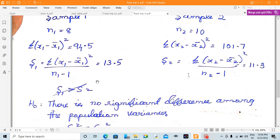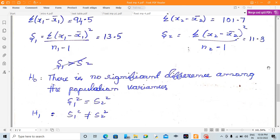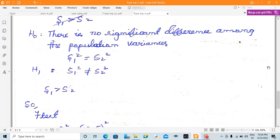We have 94.5 divided by 7. Similarly, 101.7 divided by 9 gives us 11.3. H0: there is no significant difference among the population variances. H1: there will be a significant difference.